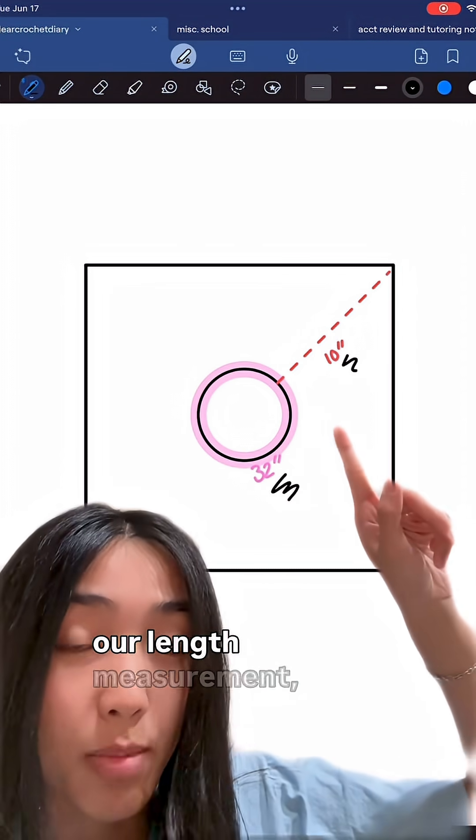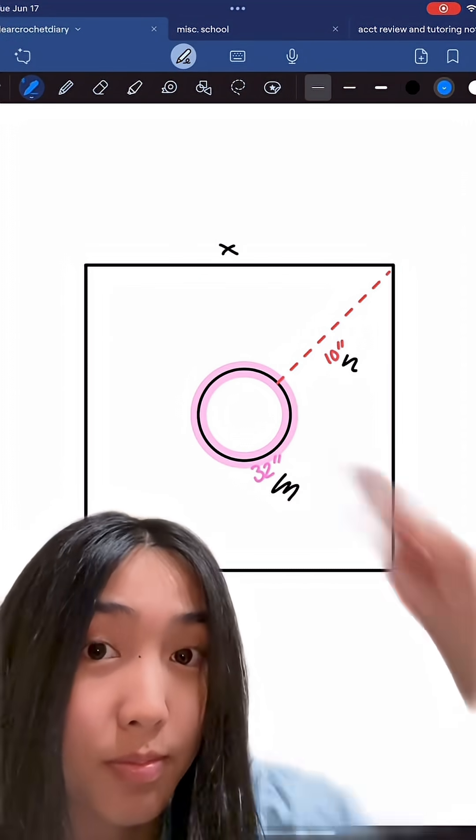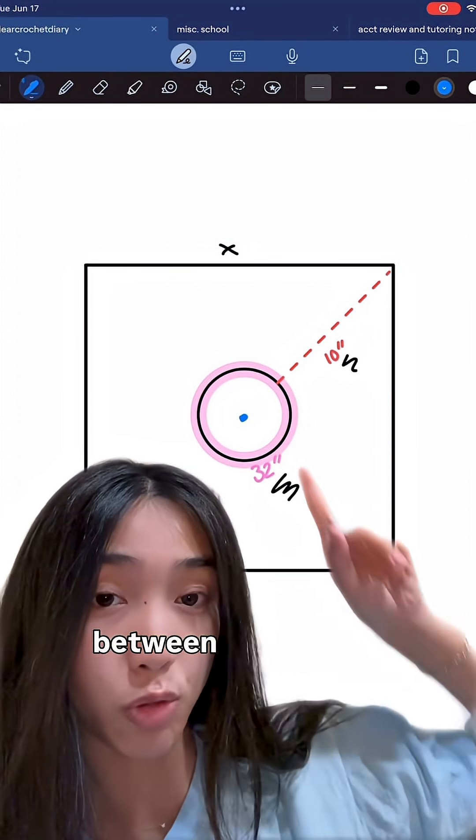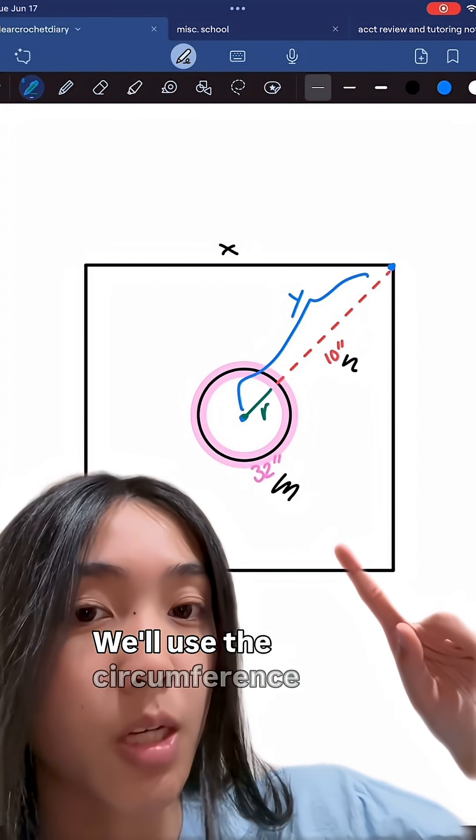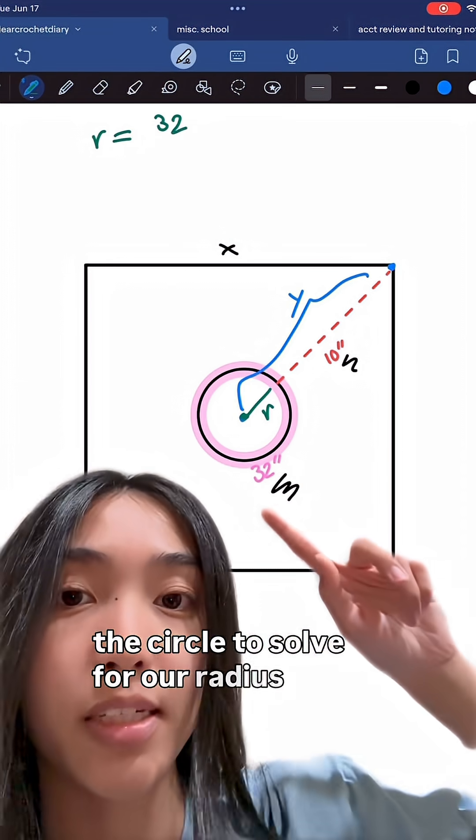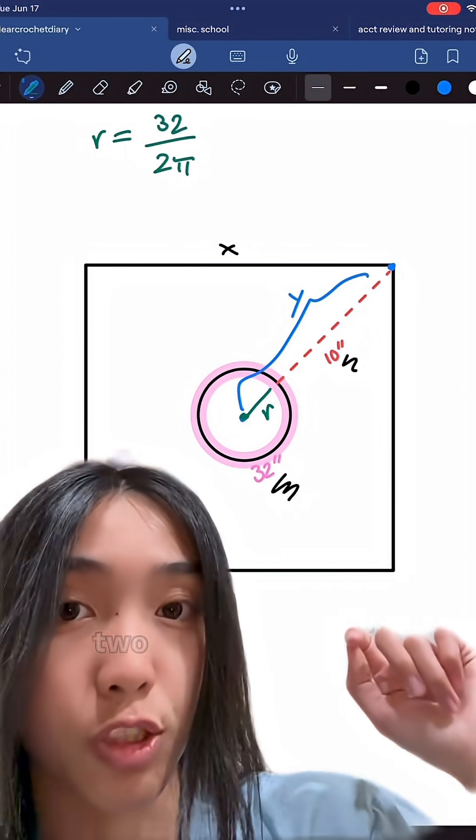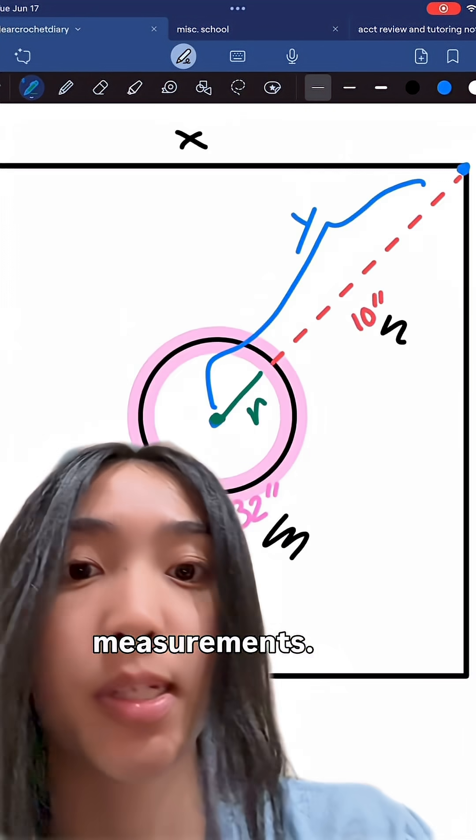With our opening measurement and our length measurement, we still need to find x. First, we need to find the length between the middle of the circle and the corner of the square. We'll use the circumference of the circle to solve for our radius using the formula circumference over 2π. That gave me roughly 5 inches for my measurements.